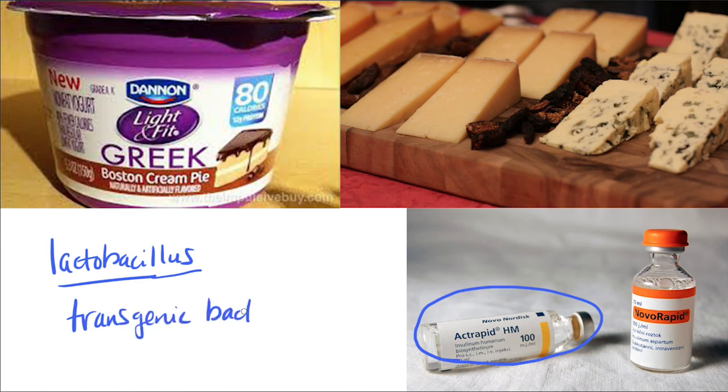Insulin today is actually made by transgenic bacteria. Transgenic means these bacteria have been given a gene that's not a normal bacteria gene, and in this case they have been given the human insulin gene. These bacteria are given the gene, they produce insulin in large amounts, and then we isolate that insulin to be used for medical insulin for diabetics.